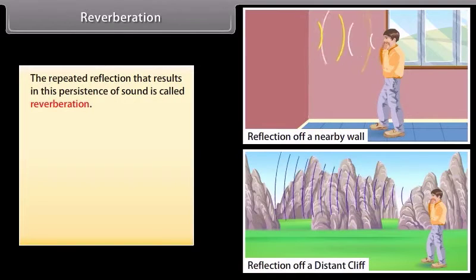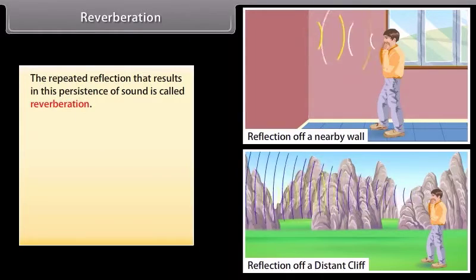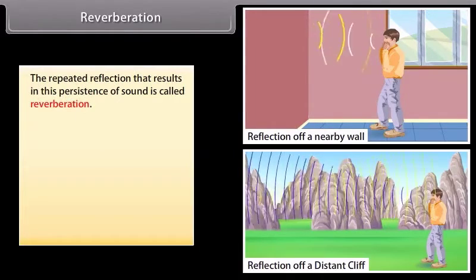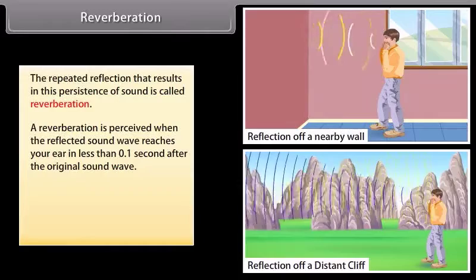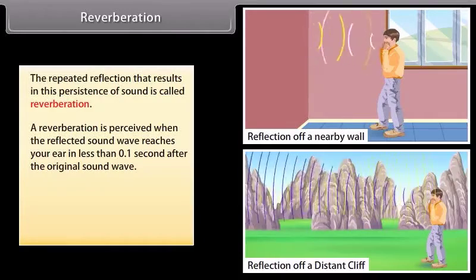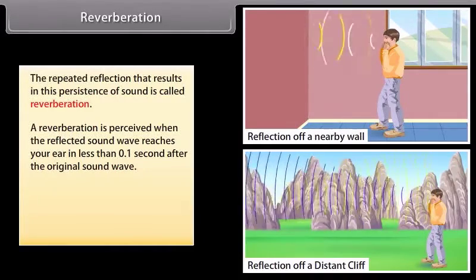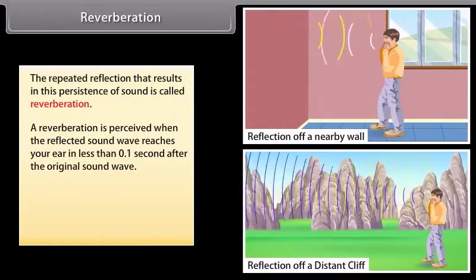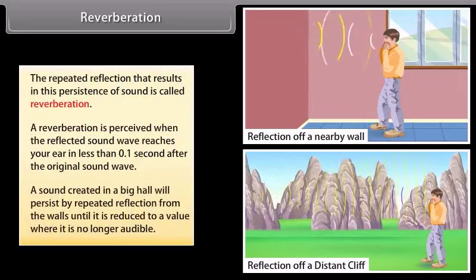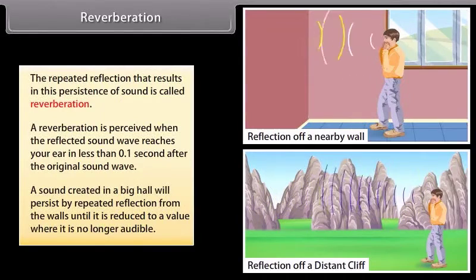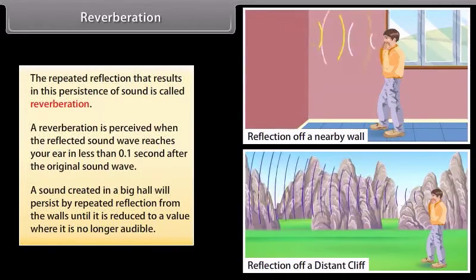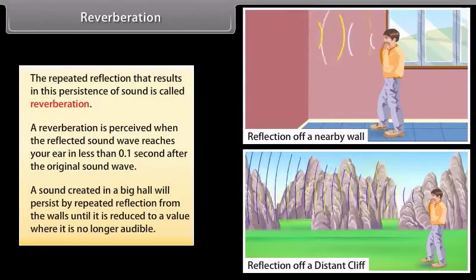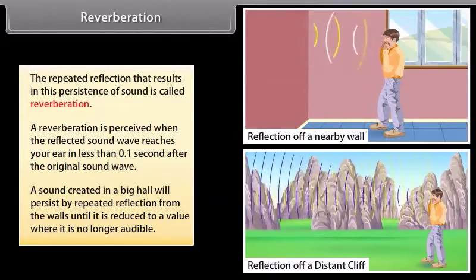Reverberation. The repeated reflection that results in this persistence of sound is called reverberation. A reverberation is perceived when the reflected sound wave reaches your ear in less than 0.1 second after the original sound wave. For example, a sound created in a big hall will persist by repeated reflection from the walls until it is reduced to a value where it is no longer audible.